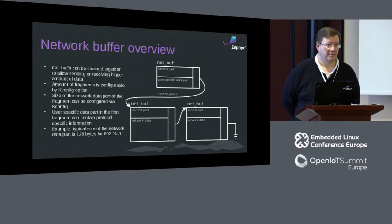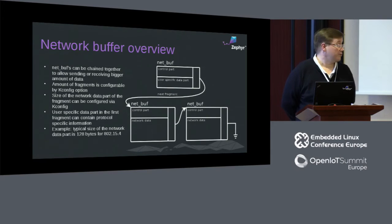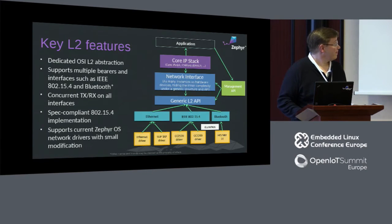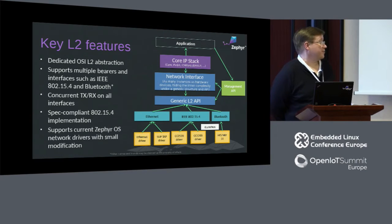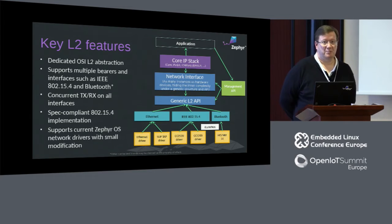We have a DHCPv4 client already merged and a DNS client is also available. Regarding Wi-Fi, we don't support Wi-Fi at the moment — that is work to be done in the future. We have management APIs for doing various management things; it was just merged so there is not much functionality yet, but we are adding scanning support and association to a PAN and so on right now.